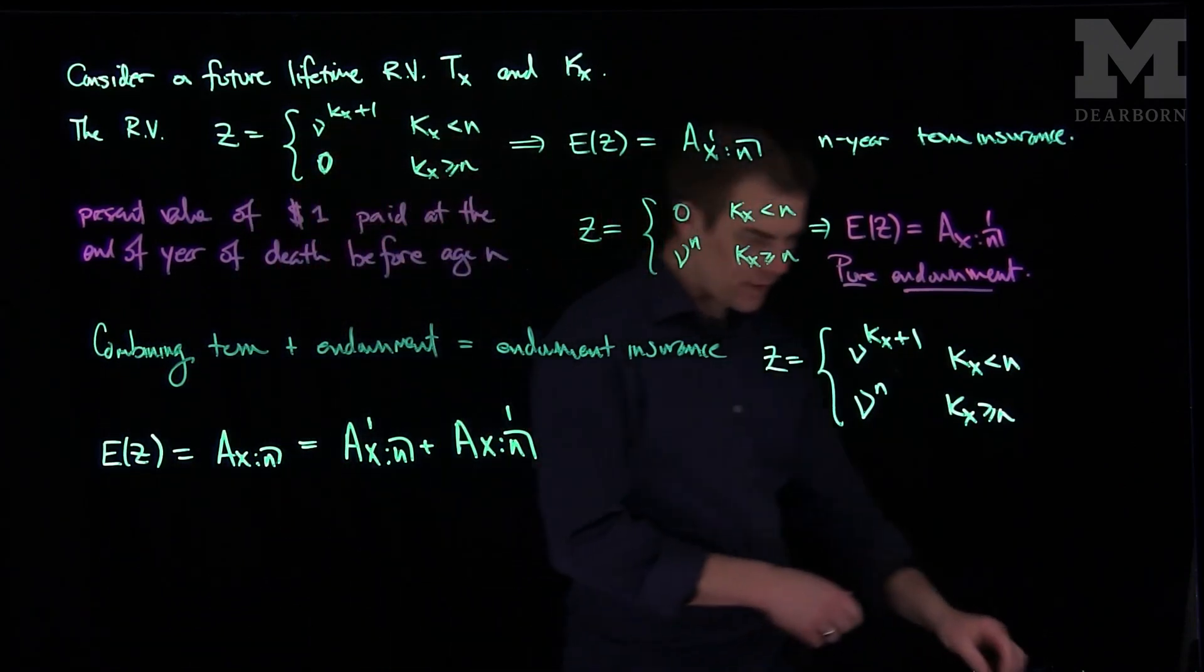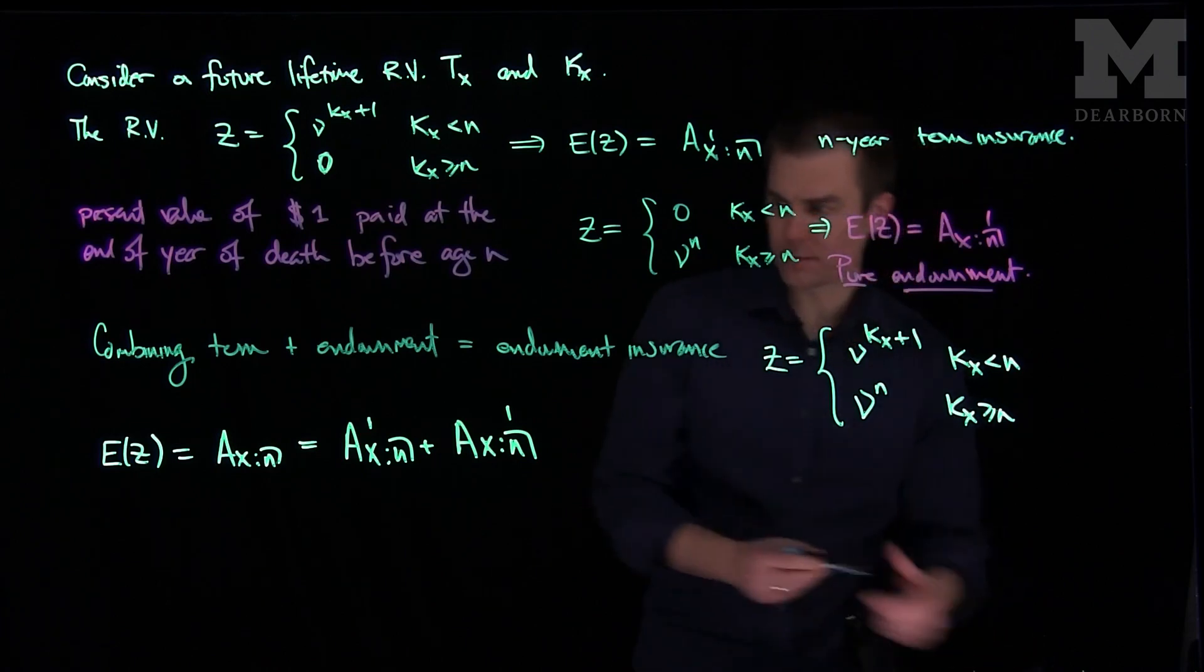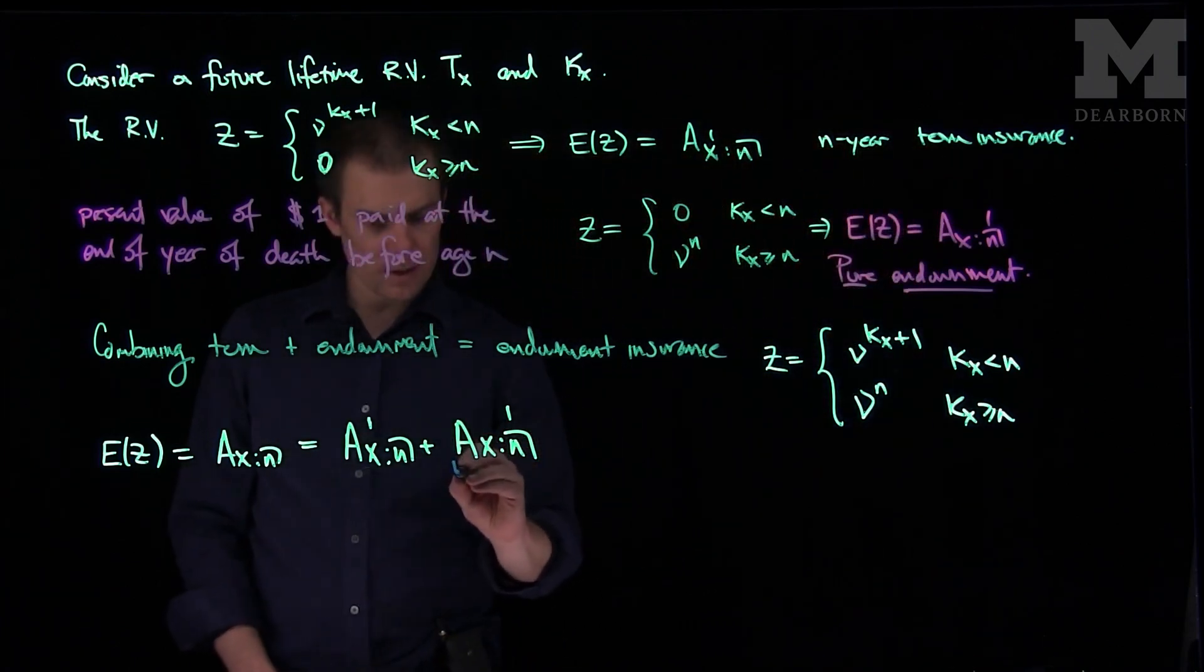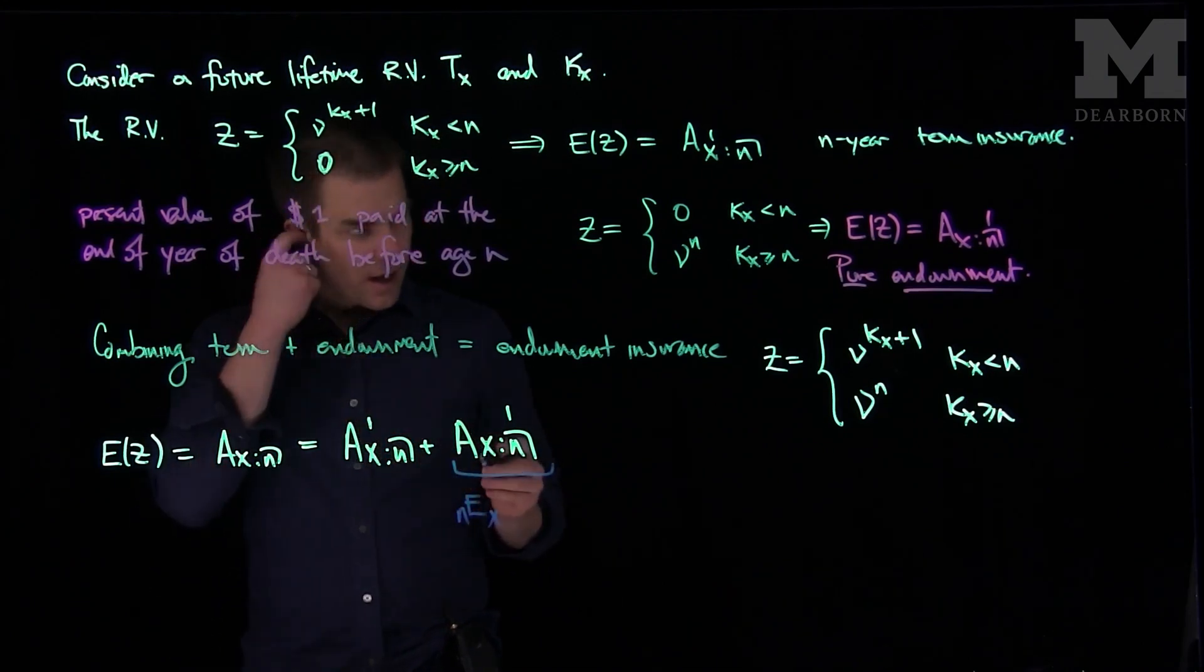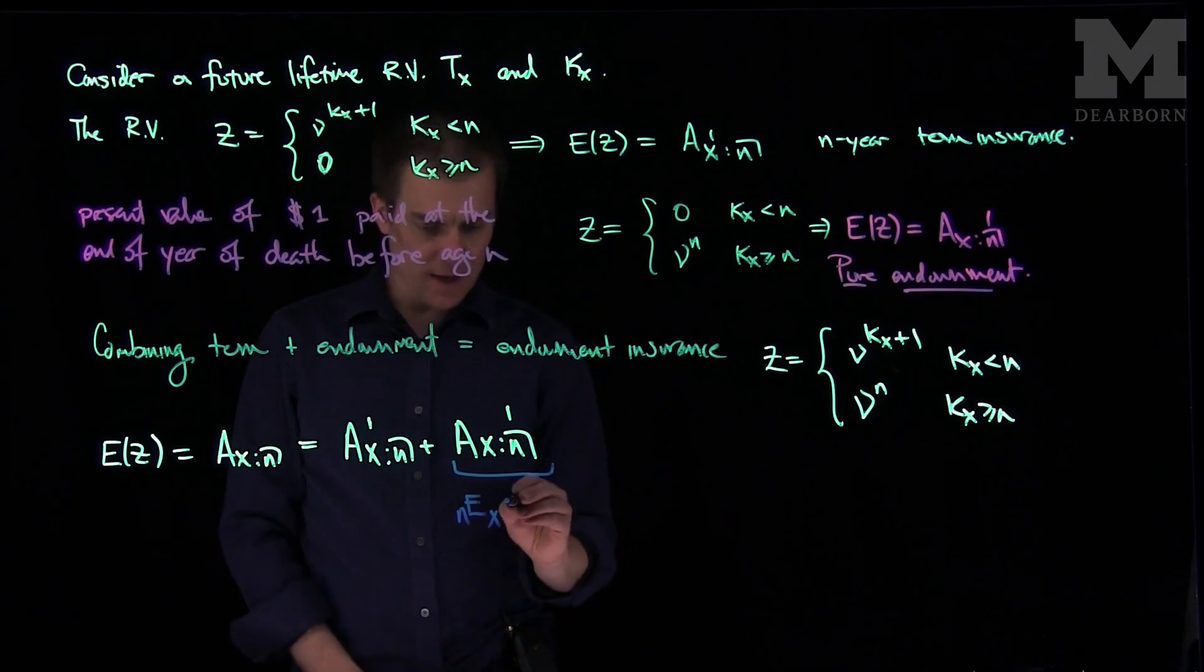And some other notation for this is the following. So we have this other notation that this is sometimes written as Ex:n. And what we can say from this is exactly this Ex:n.